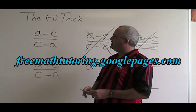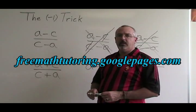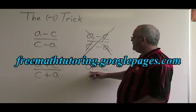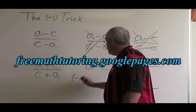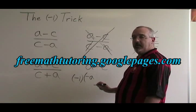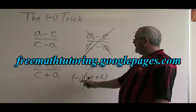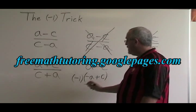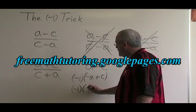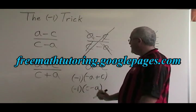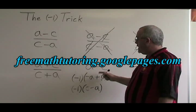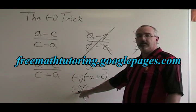So what do we do? The trick is to factor a negative one out of either the top or the bottom. Let's see what happens when we factor a negative one out of the binomial a minus c. a divided by negative one is negative a, and negative c divided by negative one is positive c. So you have a negative one and a binomial negative a plus c, which can be written backwards: negative a plus c can be written c minus a. The negative one trick allows you to write a binomial with a minus sign backwards — a minus c becomes c minus a, but only if you factor out this negative one.